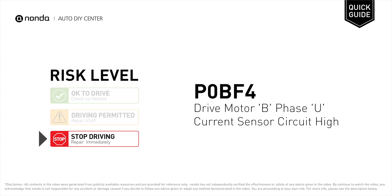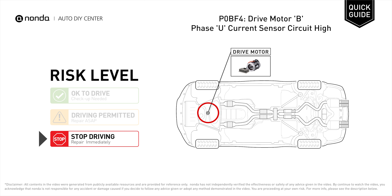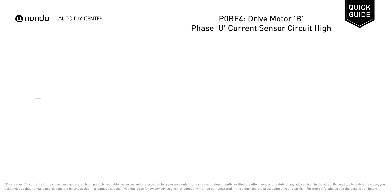P0BF4 is a diagnostic trouble code for drive motor B phase U current sensor circuit high. Under this circumstance, stop driving and repair your vehicle immediately. It means that the battery energy control module detects that the cells in the high voltage battery pack are contributing to the high voltage system unequally.